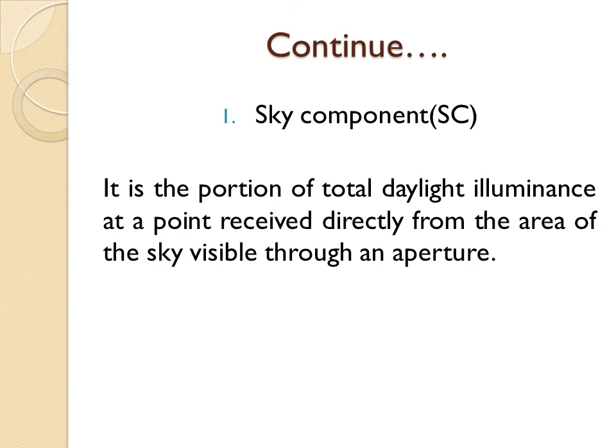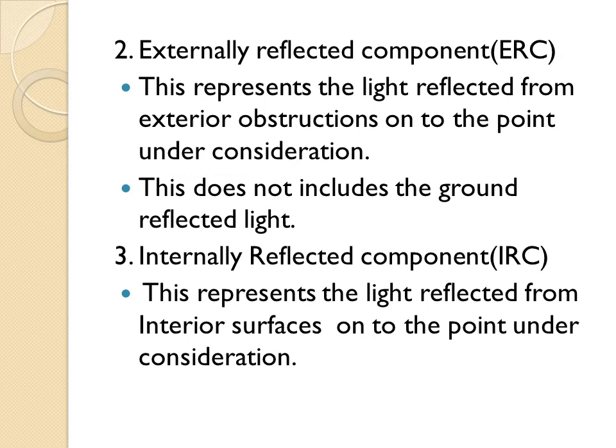The sky component is the portion of total daylight illuminance at a point received directly from the area of sky visible through an aperture, window, or any opening provided in the building. The externally reflected component represents light reflected from exterior obstructions onto the point under consideration. The internally reflected component represents light reflected from interior surfaces such as walls, floors, and ceilings.